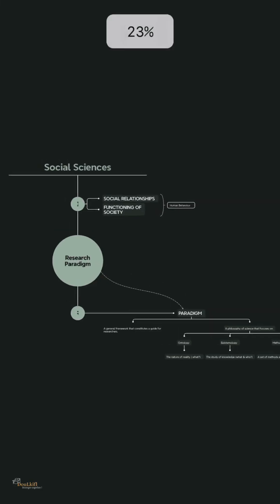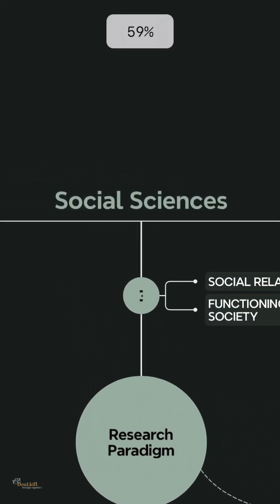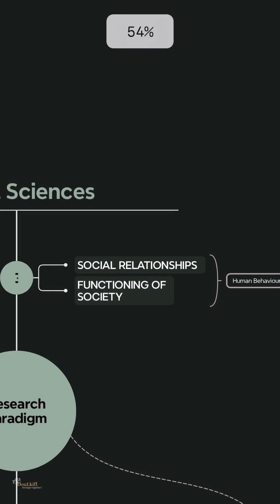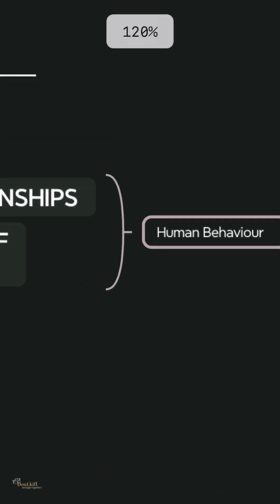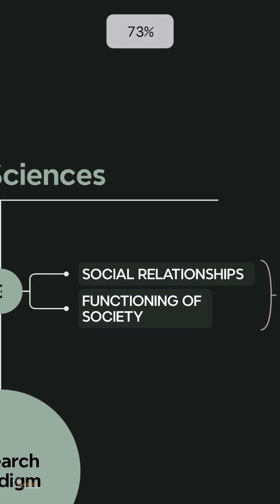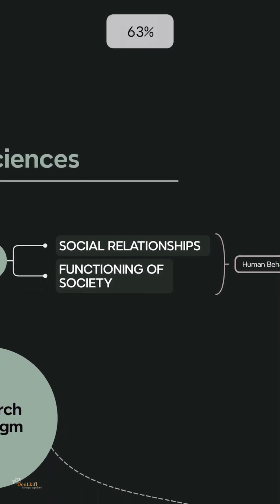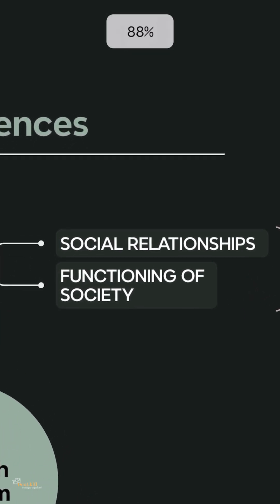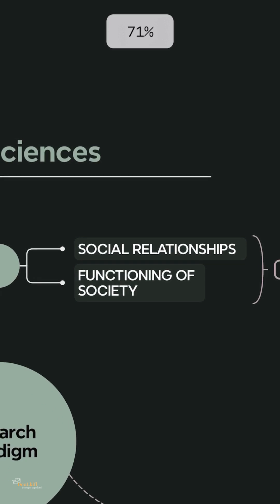The social sciences explore distinct aspects of human behavior. When we say human behavior, we are talking about social relationships or the functioning of society.